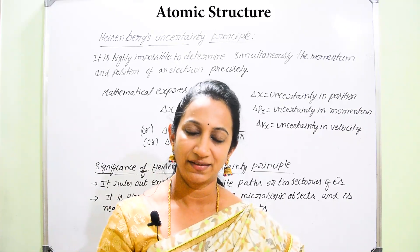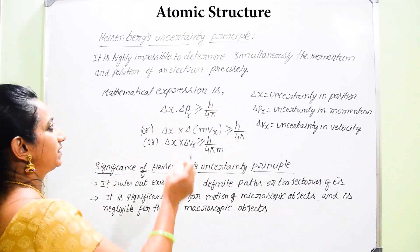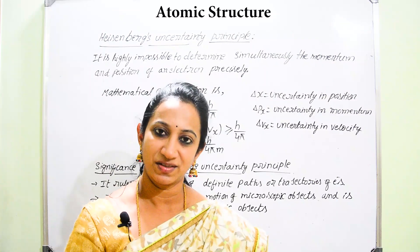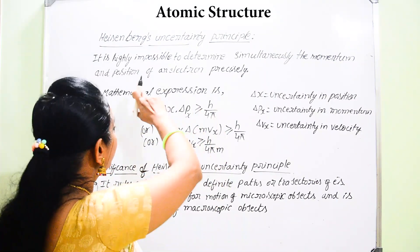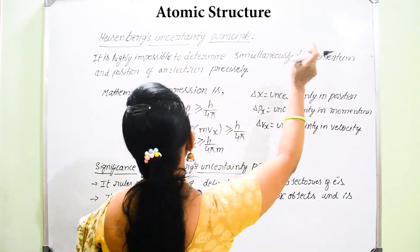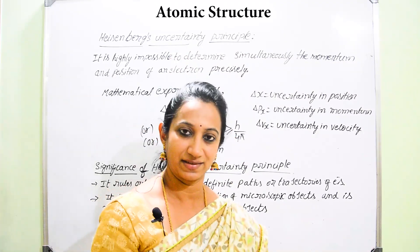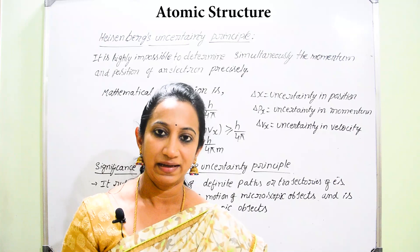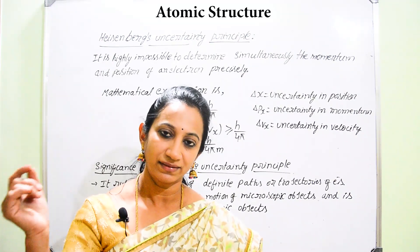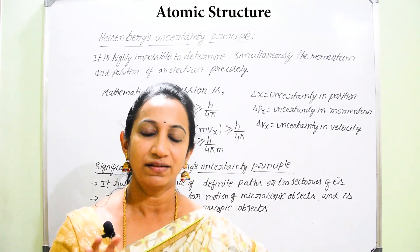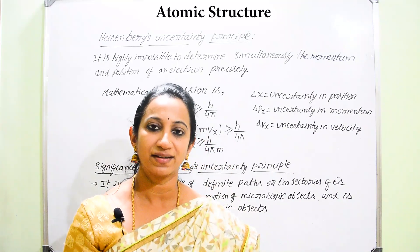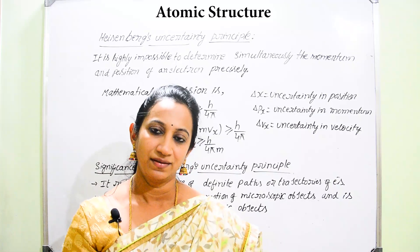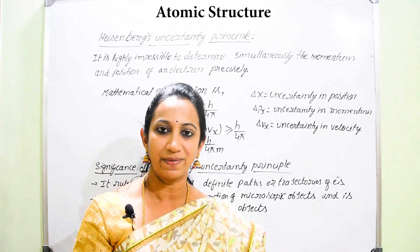One of the scientists by the name of Heisenberg gave one principle named Heisenberg's uncertainty principle. According to this principle, Heisenberg says that it is highly impossible to simultaneously determine the momentum and position of an electron precisely. That means in an atom, the electron is moving in a particular orbital, and it is highly impossible to determine both its exact position and exact momentum.